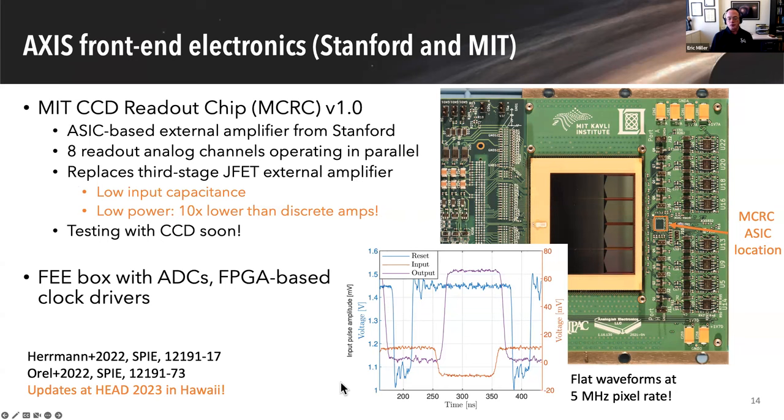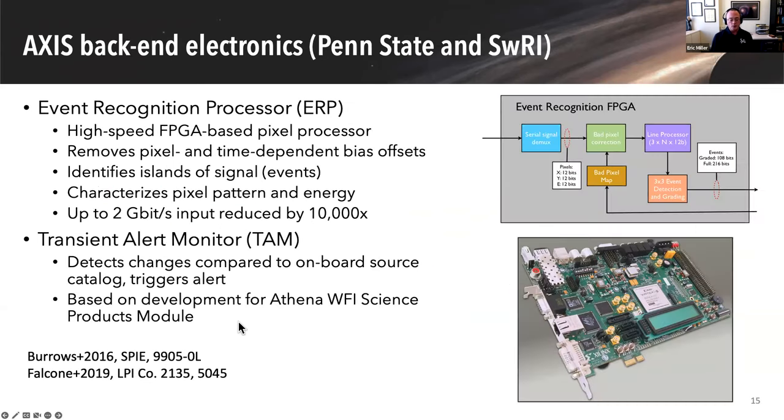This shows how well it performs. You don't really need to understand a whole lot about this plot, except this is time. This one cycle is equivalent to a five megahertz pixel rate, significantly faster than we need to operate. The y-axis is showing voltage of different clocks in this ASIC. The key here is that these rises and these falls are very fast and the flat parts of the waveform are very flat. And that's exactly what we need to get the low noise that we need. Stay tuned for more updates. There'll be updates at the head meeting in Hawaii.